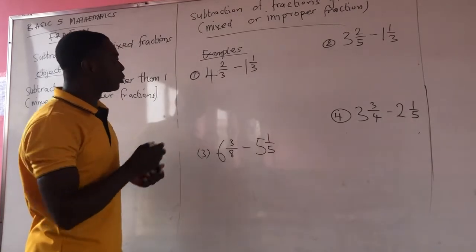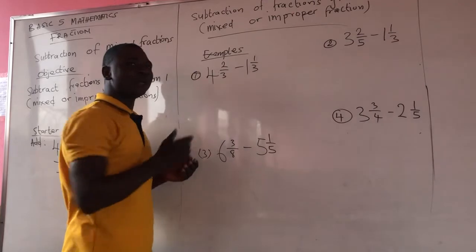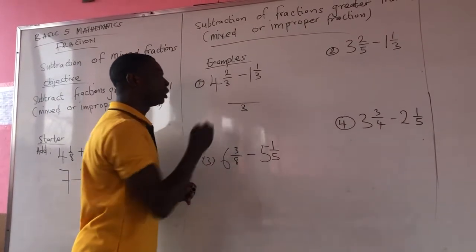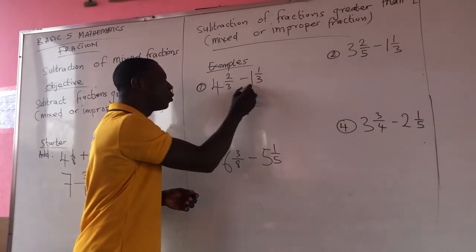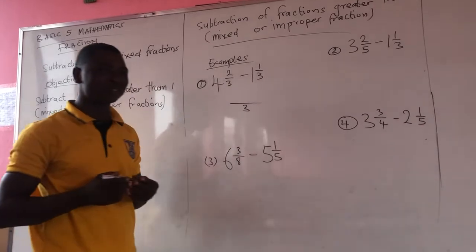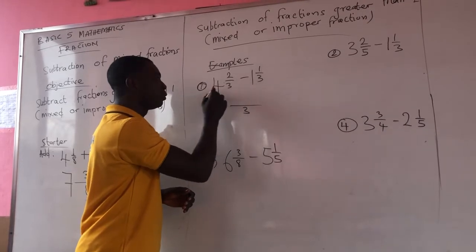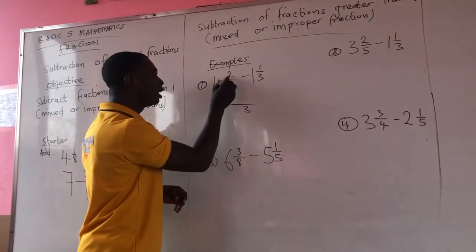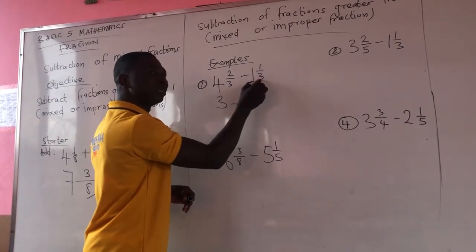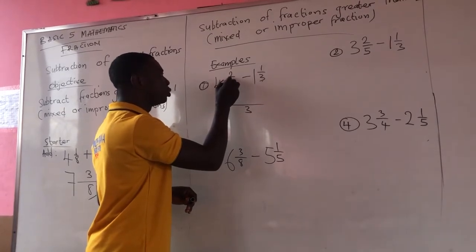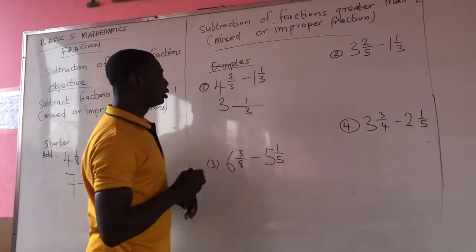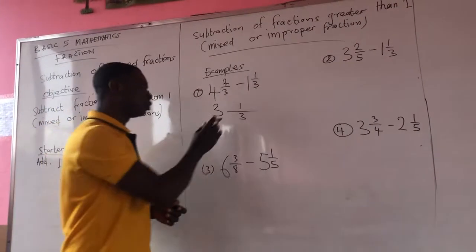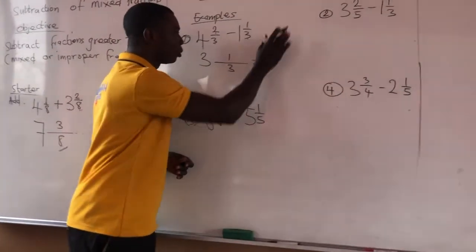Example 1. Here we have the same denominator — like fractions. So our LCM will be the same denominator, which is 3. We subtract the whole numbers: 4 minus 1 gives me 3 whole numbers. Since the denominators are the same, we subtract the numerators. So the final answer is 3 whole numbers and 1 out of 3.